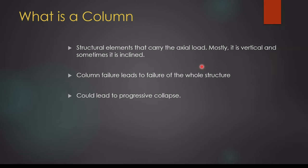So we are going to discuss today about column failures. If a column fails, the whole structure or part of the structure could fail. Therefore we have to be very careful in column design, unlike other structural elements. Column is very important. If a beam fails, that particular area will fail, but if a column fails there are possibilities of failing part of the structure or the whole structure. This is called progressive collapse — it occurs when a key element like a column fails and the whole structure could fail as a result.